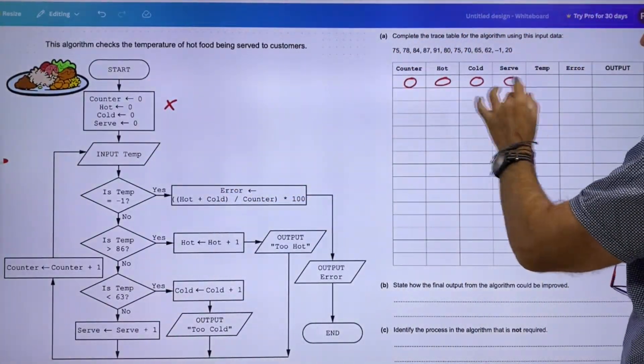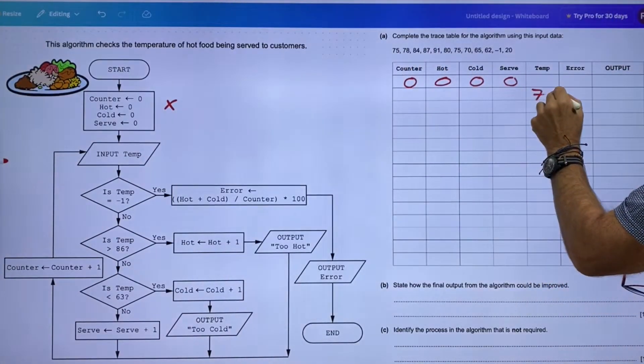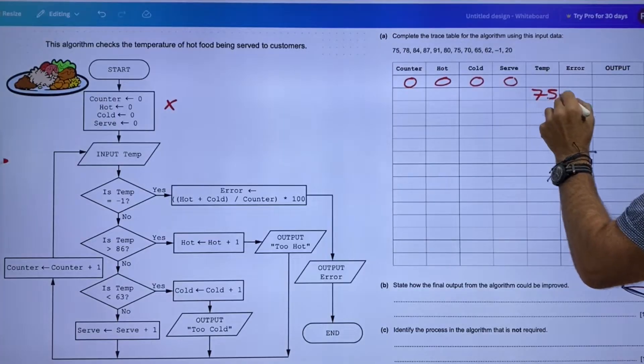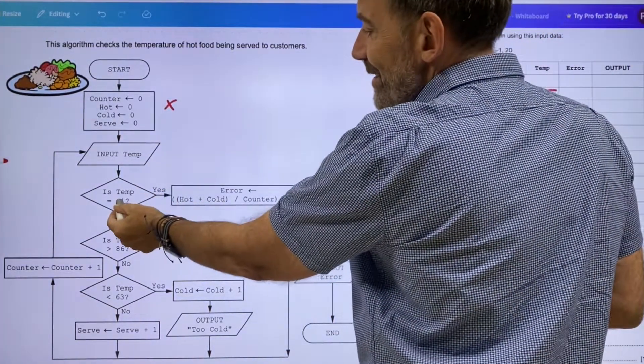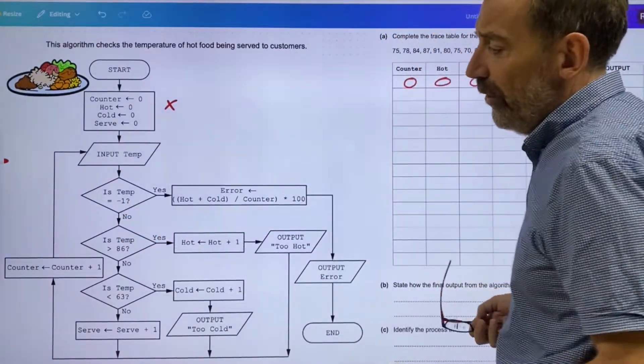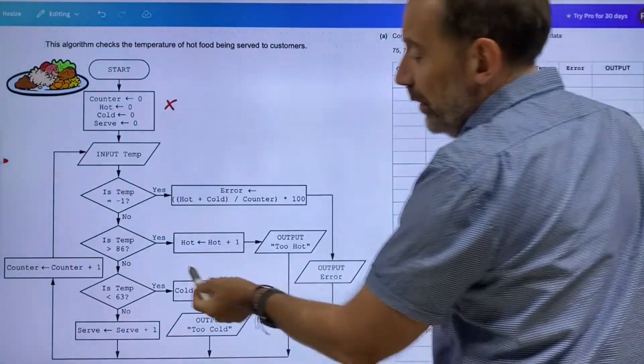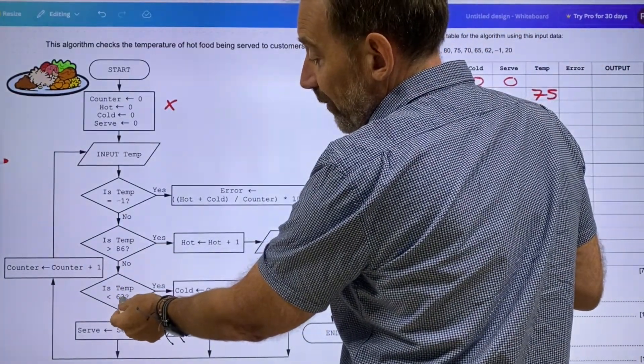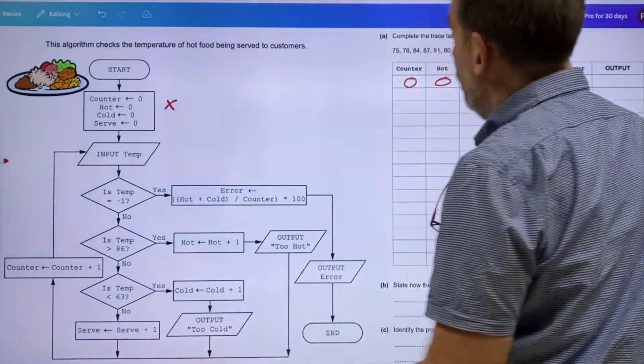Looking at this loop, input the temperature. 75. Because I've done that and I've omitted it, it's not going to be used anymore. I'm going to keep that there but I'm going to put in here on the next line 75. Is the temperature equal to minus one? Of course it's not.